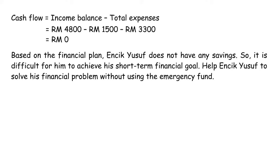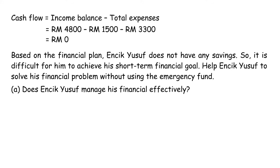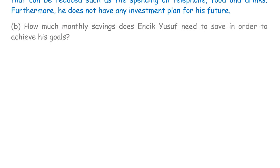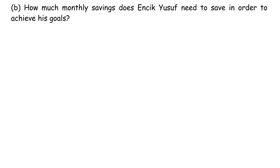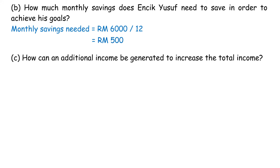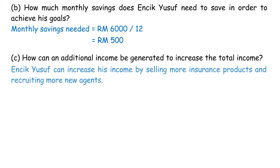Based on the financial plan, Enzik Youssef does not have any savings, making it difficult for him to achieve his short-term financial goal of buying a computer costing RM6,000. He does not manage his finances effectively because there are expenses that can be reduced, such as telephone, food, and drinks, and he has no investment plan. Monthly savings needed equal RM6,000 divided by 12 equals RM500. Enzik Youssef can increase his income by selling more insurance products and recruiting more new agents.